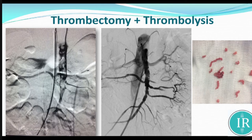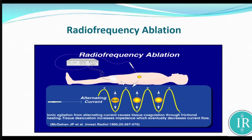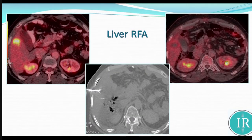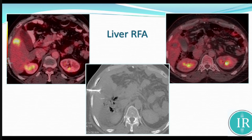Thrombectomy: if there is thrombosis in the SMA, we can perform lysis and recanalization. Radio frequency ablation (RFA): through a percutaneous needle, for small lesions — less than three in number and maximum three centimetres — we can perform RFA at 100 degrees Celsius, which results in complete ablation equivalent to surgical resection. This is known as RFA, radio frequency ablation. Recently, microwave ablation is also available.